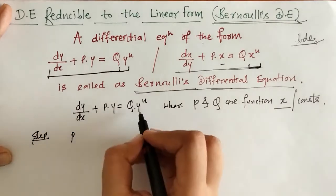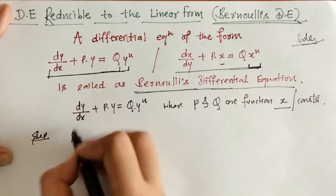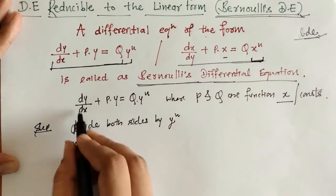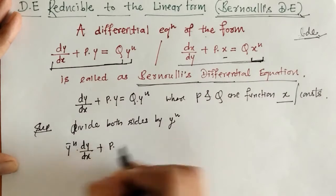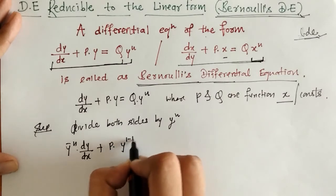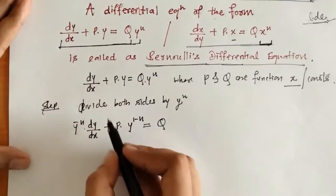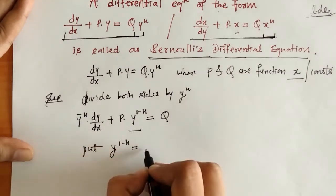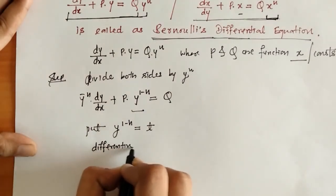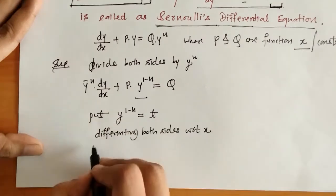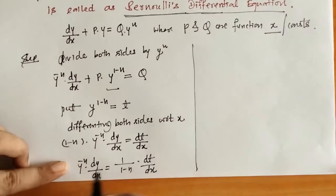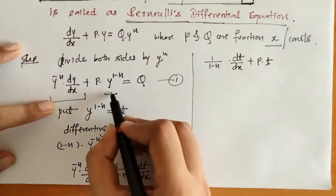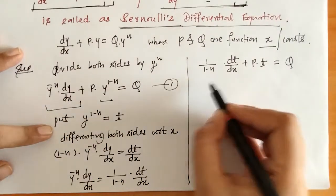First, what we have to do: we will divide this differential equation by y raised to n. Then we will have y raised to minus n times dy/dx plus P equals Q. Now we will put y raised to (1 minus n) as another variable t. Then differentiating both sides with respect to x, we find this value and substitute it into the equation, giving us t and Q.